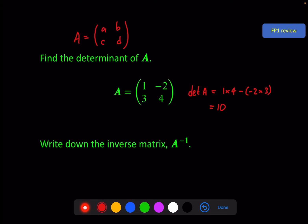That's important for the inverse, because the inverse of matrix A uses the determinant — 1 over the determinant of A — and then a slightly altered matrix of d, minus b, minus c, A. So for this example, the inverse of A is 1 over 10 times the matrix: 4, and then a minus on the minus 2 gives us a plus 2, minus 3, and then a 1.